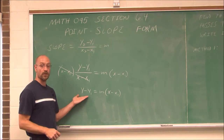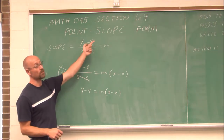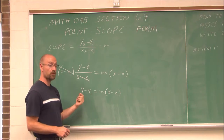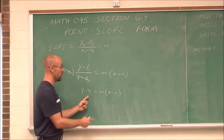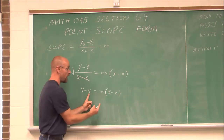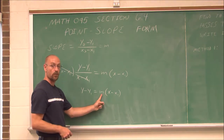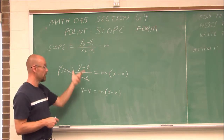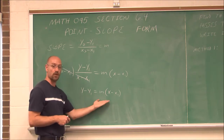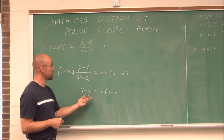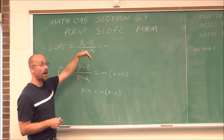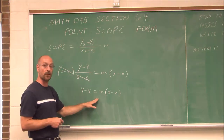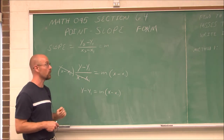This equation is the point-slope form of a line. We can use this if we have the information of a point x,y and the slope. Sometimes it's important to know the name of a formula and not just the formula itself — because if we know the name point-slope, and I have a point and I know the slope, this is the equation I want to use because that's its name: point-slope.